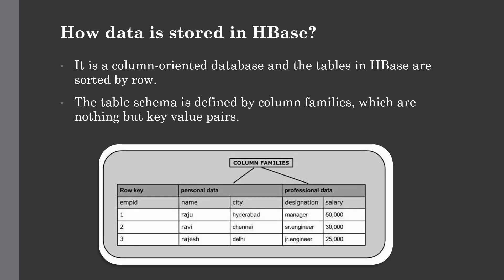Now let's talk about how data is actually stored in HBase. Since it is a column-oriented database with column families, this will help you visualize how the data looks in an HBase table. The tables are sorted by rows, and the table schema defines only the column families, which are key-value pairs. Tables can have multiple column families and each family can have any number of columns, making it suitable for tables that can have thousands of columns and billions of records.